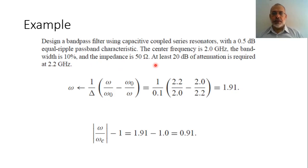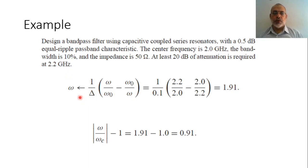The first step is to determine the order of the required filter from the specification of the required attenuation at this frequency. From the frequency transformation, we know that the frequency transformation from bandpass filter to low-pass filter is obtained by equating 1 over delta times (omega over omega_0 minus omega_0 over omega) to omega.